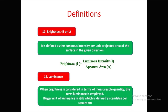When brightness is considered in terms of a measurable quantity, the term luminance is used. The bigger unit of luminance is stilb, which is defined as candelas per square centimeter (cd/cm²).